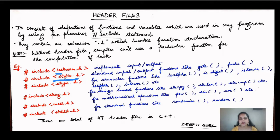The second header file is stdio.h — 'std' means standard input/output functions. In the C++ library there are standard input/output functions like getc, puts, getch, and many others. These standard input/output function files have to be included, and you write: hash include stdio.h.